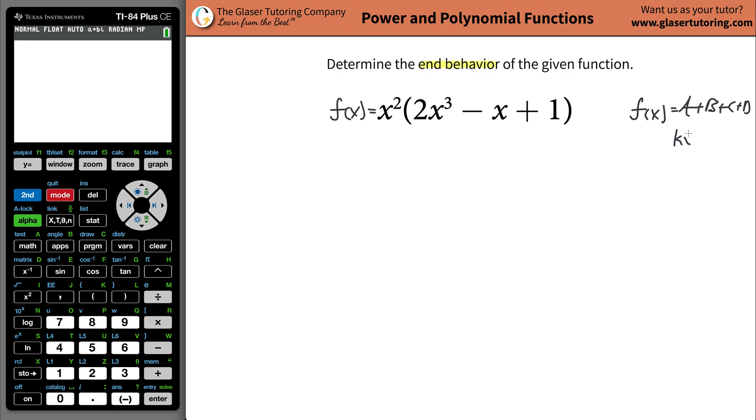But you have to have something where you have these terms that are added or subtracted by one another. Here I have an x squared multiplied by this whole thing, so I don't have it in that form. The first thing is to do that. So just simply distribute now the x squared to every single term.